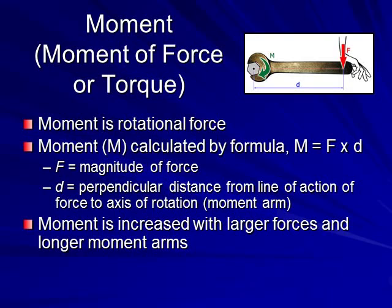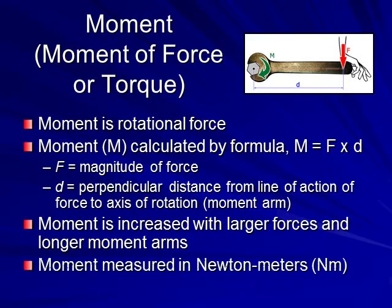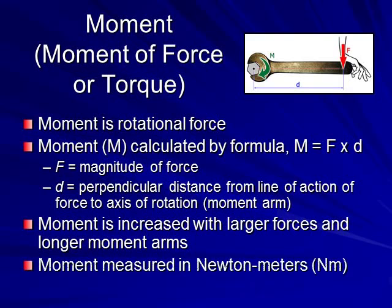With larger forces and larger moment arms, or longer moment arms, we produce increased moments. Smaller forces and smaller moment arms are going to produce smaller moments. Moment is measured as a Newton meter.